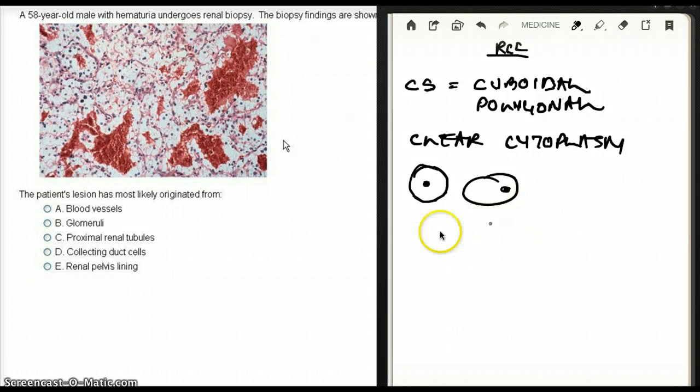And there is going to be very little polymorphism. What does that mean? It means that even though it's a cancer, the cells are similar in size and shape.